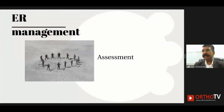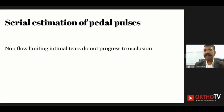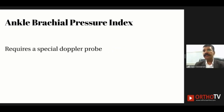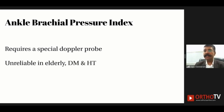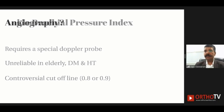Initial management when the patient presents in an emergency obviously depends upon estimation of vascularity, and the best way to do that is serial estimation of pedal pulses. Non-flow-limiting intimal tears do not progress to full occlusion, so there is no need to use the ankle-brachial pressure index, as it requires special equipment and is unreliable in elderly patients, diabetics, and hypertensives. The cutoff for ABPI is also controversial.